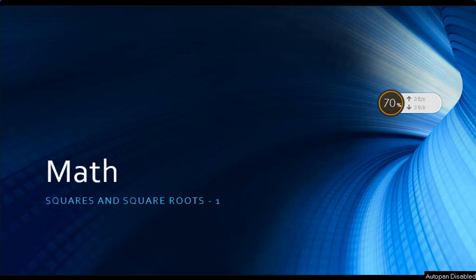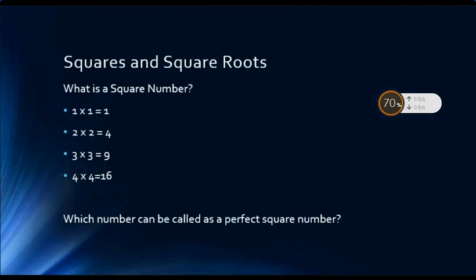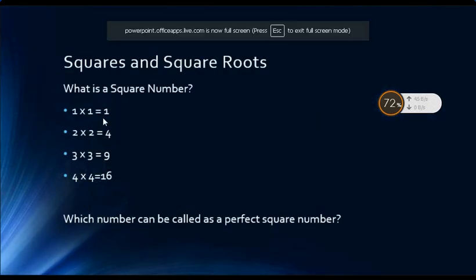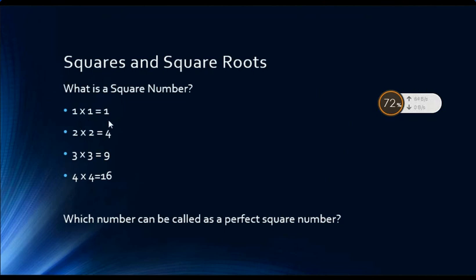Squares and square roots. What is a square number? Have a look at the following multiplications: 1 into 1 is 1, 2 into 2 is 4, 3 into 3 is 9, and 4 into 4 is 16. When you multiply any natural number with itself, the product that we get is called the square of that natural number.